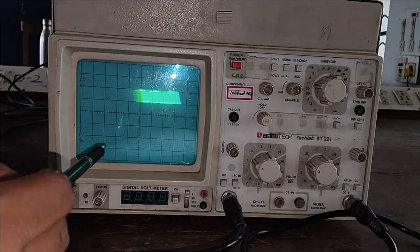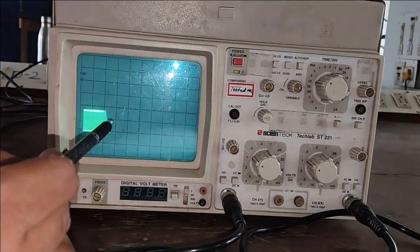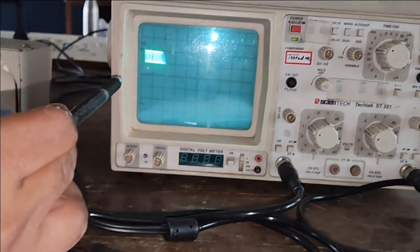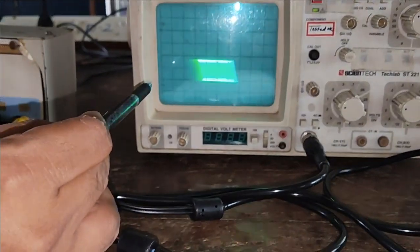Near to the cutoff frequency the output voltage goes on increasing. In this way we conduct the active high pass filter using op-amp 741.